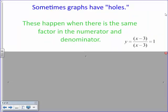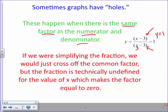There are also cases where instead of an asymptote there's a hole. A hole occurs when the same factor appears in both the numerator and the denominator. For example, if there's an (x minus 3) on top and an (x minus 3) on bottom, they simplify to one, making y equals one. But in the original rational function, plugging in x equals three makes it undefined because you'd have zero in the denominator.